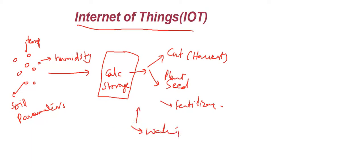It also determines when irrigation should take place and how much irrigation is needed. So this is an example of an interconnection of devices where certain parameters are sensed, stored at another device, and decisions are made through calculations and processing. This is called Internet of Things.